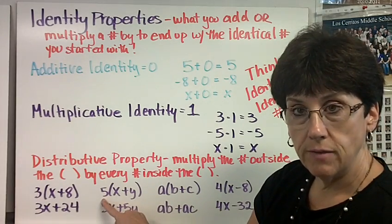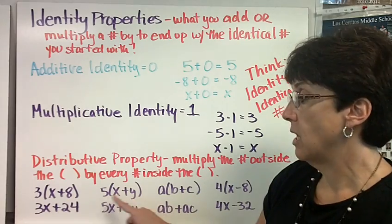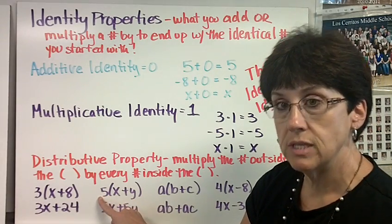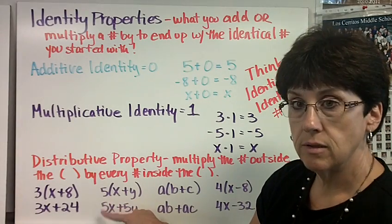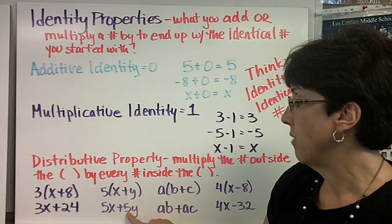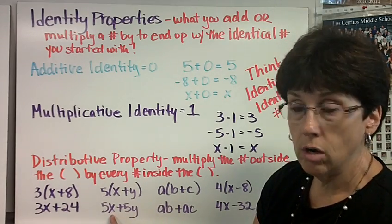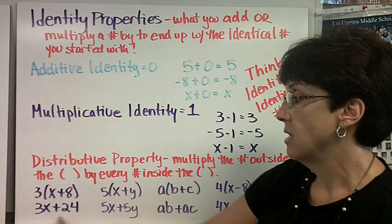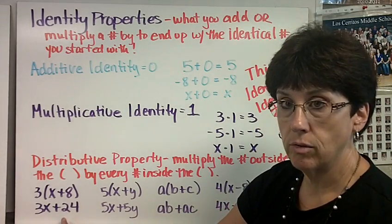Here's another problem: 5 times the quantity x plus y. Once again, you multiply what's on the outside of the parentheses by everything inside. 5 times x is 5x. What's 5 times y? 5y. And since I don't know what x and y are, I can't combine anything. I don't know what x is, so I can't add those together.